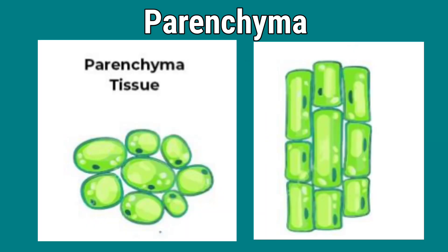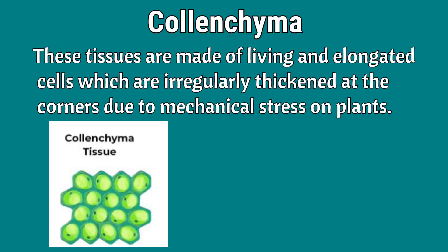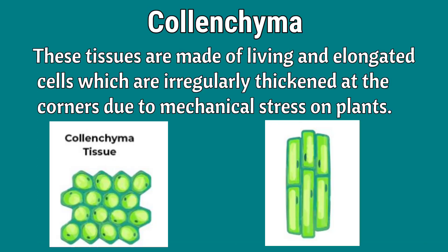These cells have intercellular spaces — you can observe here the space between one cell and another; those are called intercellular spaces. Next, collenchyma: these tissues are made up of living and elongated cells which are irregularly thick at the corners due to mechanical stress on plants. Look at the tissue here and observe the cell arrangement.